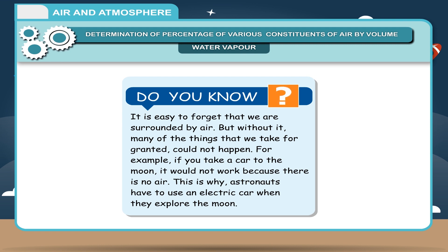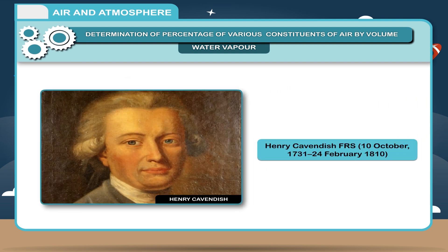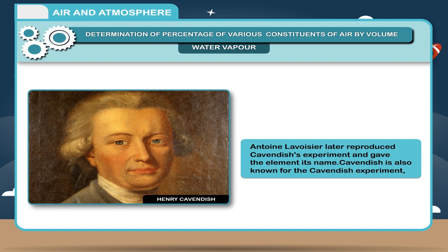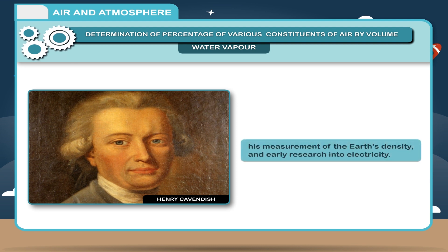Henry Cavendish FRS (10 October 1731 – 24 February 1810) was a British scientist noted for his discovery of hydrogen, or what he called inflammable air. He described the density of inflammable air, which formed water on combustion, in a 1766 paper on fictitious airs. Antoine Lavoisier later reproduced Cavendish's experiment and gave the element its name. Cavendish is also known for the Cavendish experiment, his measurement of earth's density, and early research into electricity.